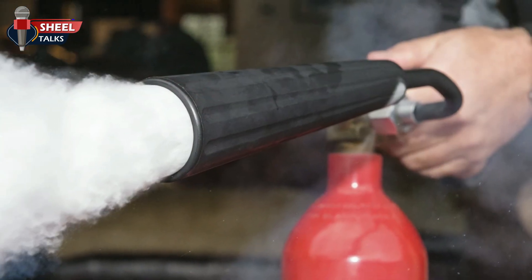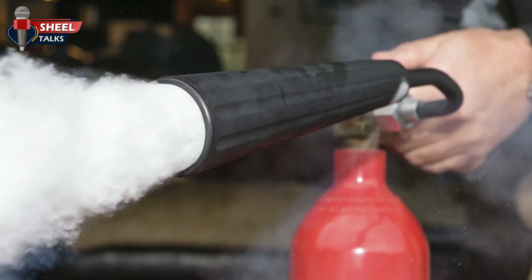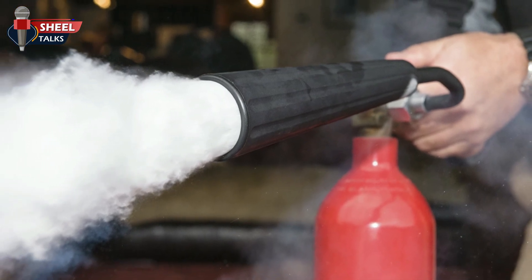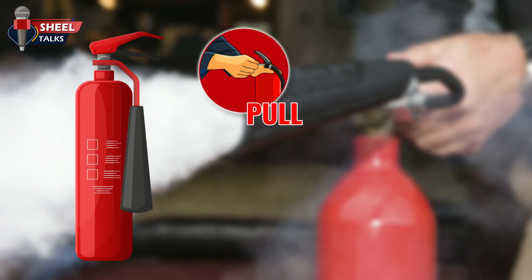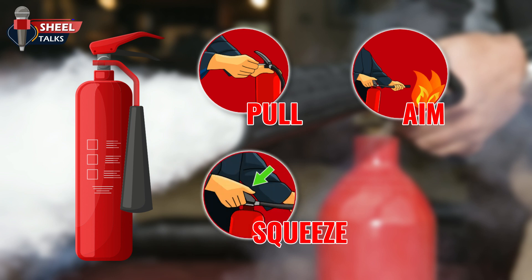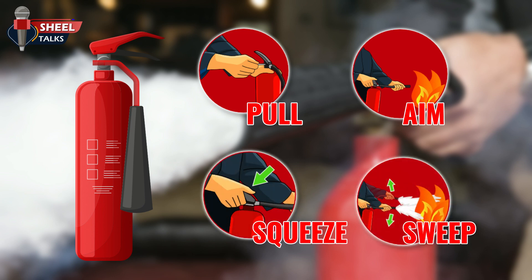Most fire extinguishers operate using the following PASS technique. P means pull the locking pin. A means aim at the base of the flames. S means squeeze the handle. S means sweep back and forth over the burning area.